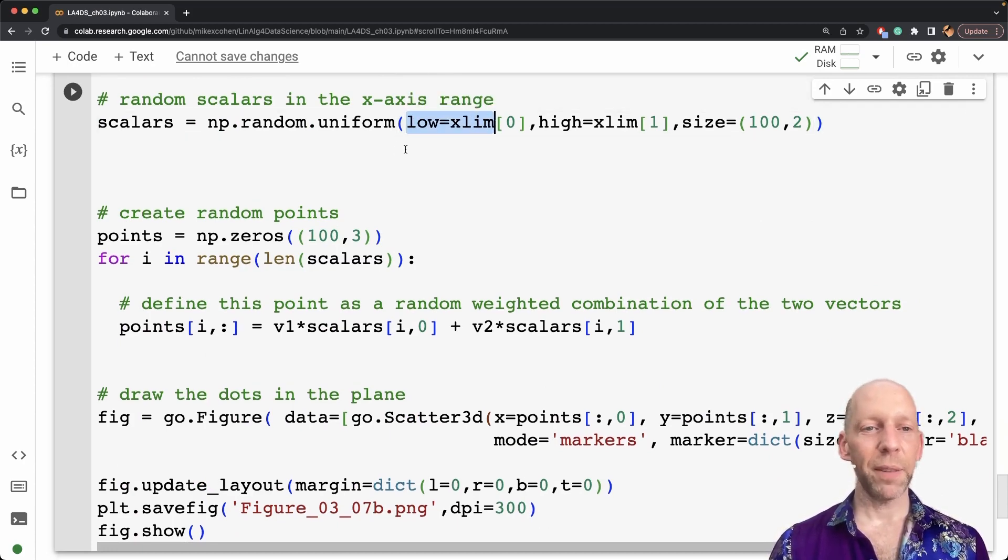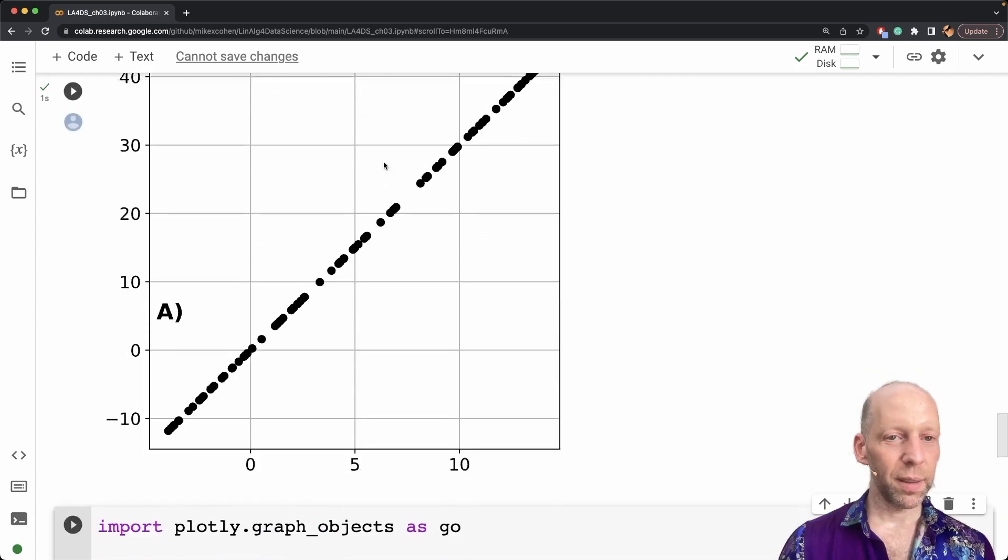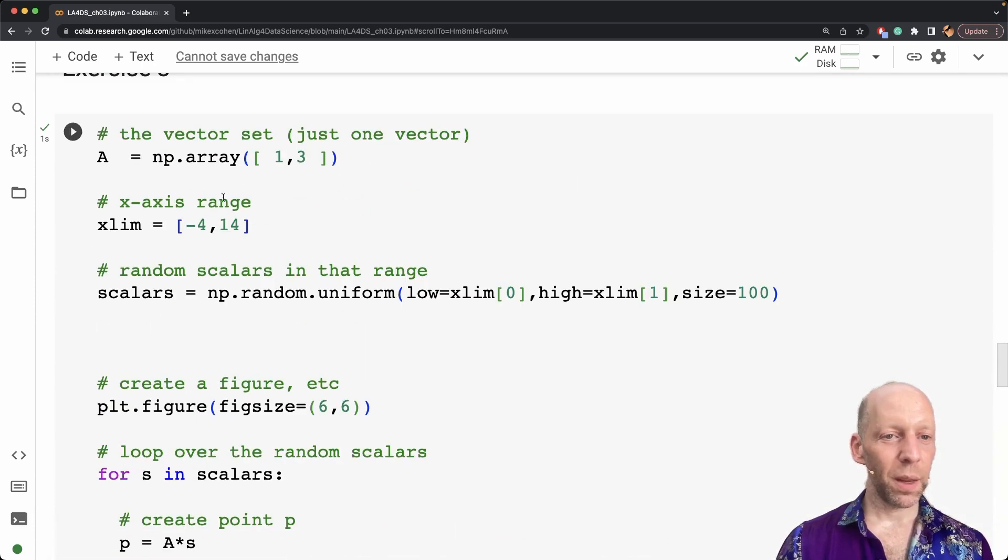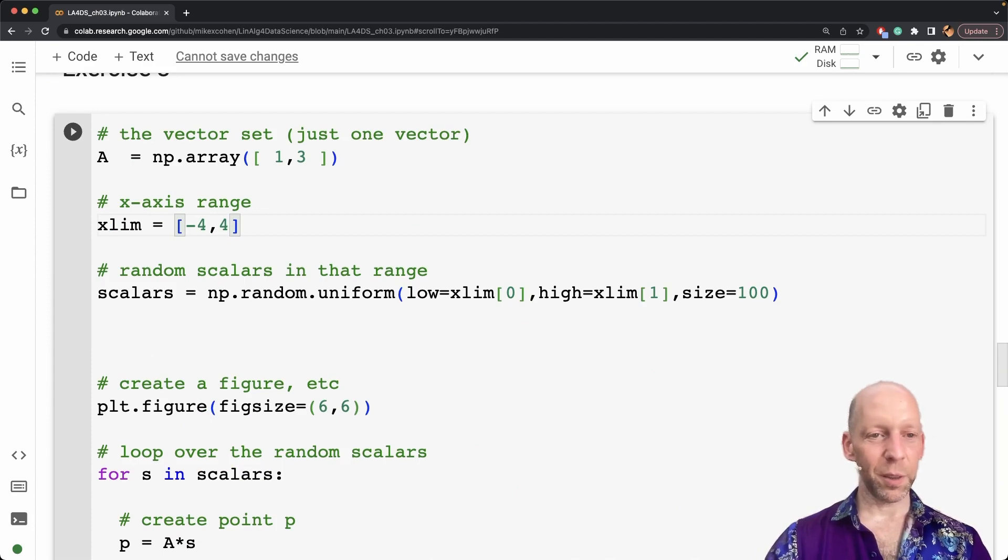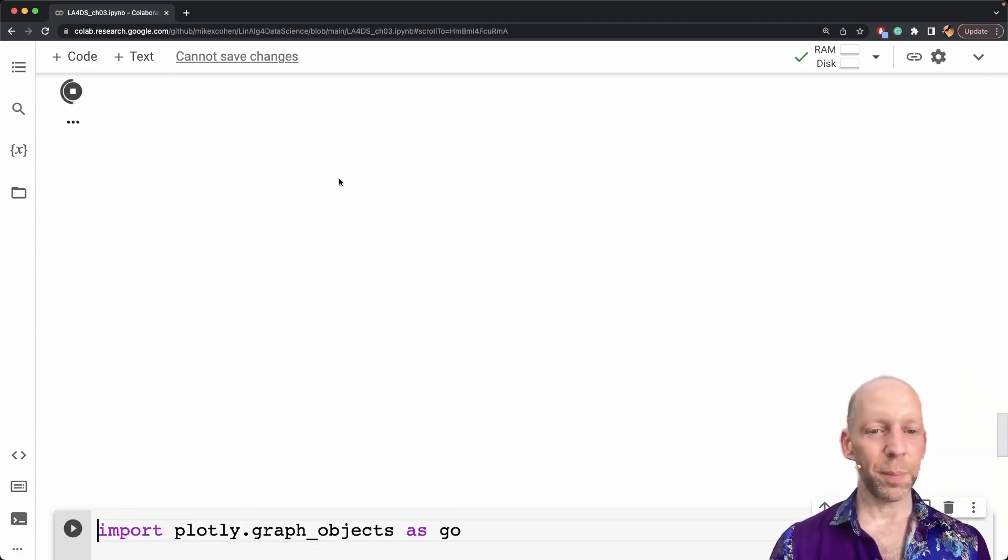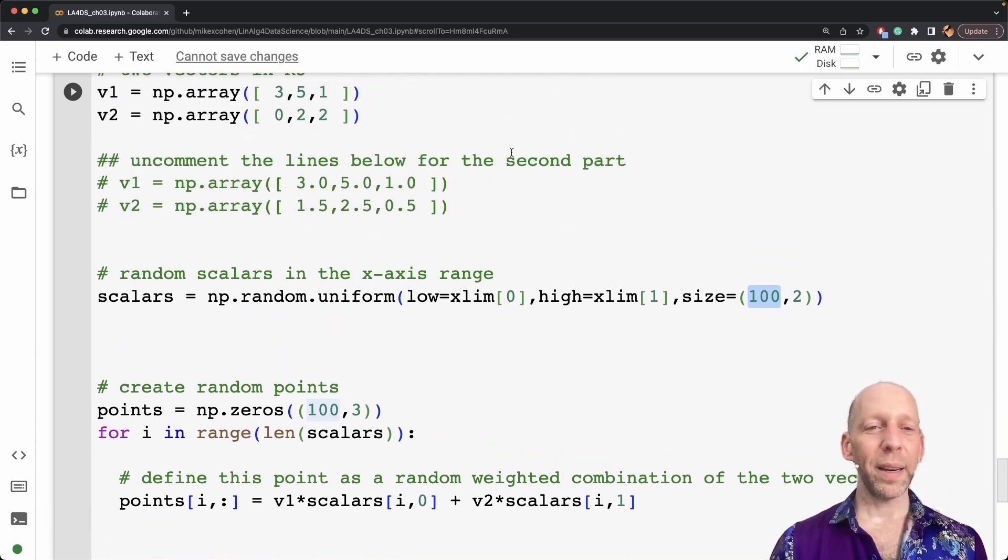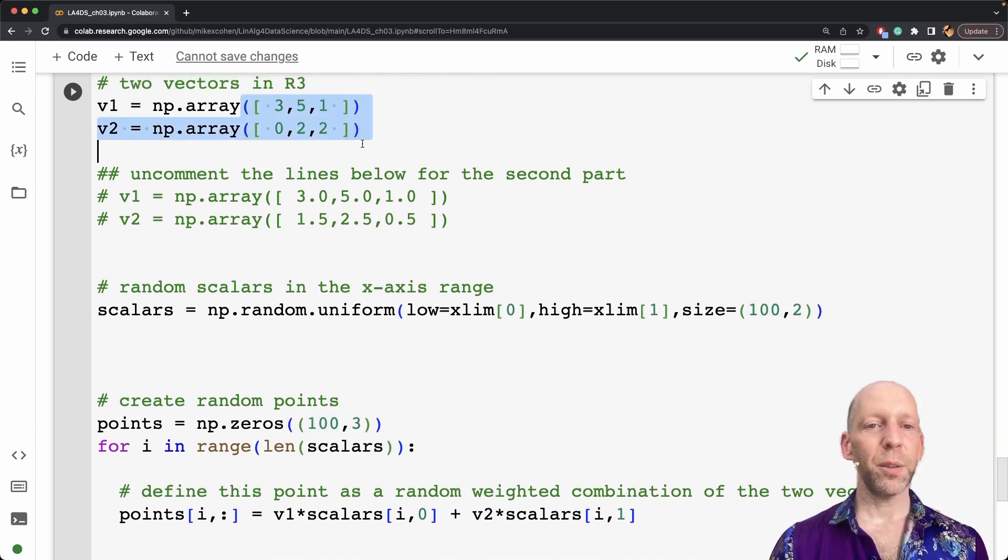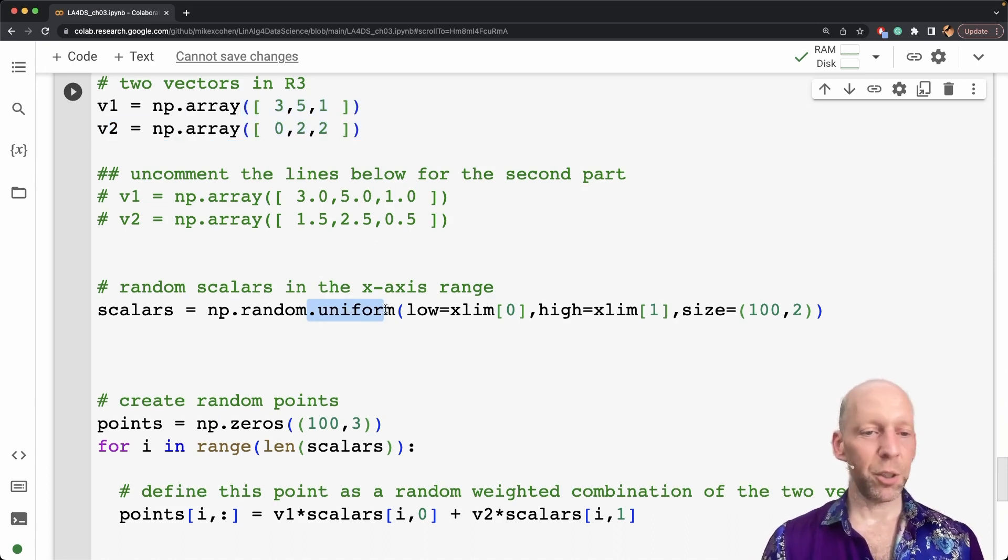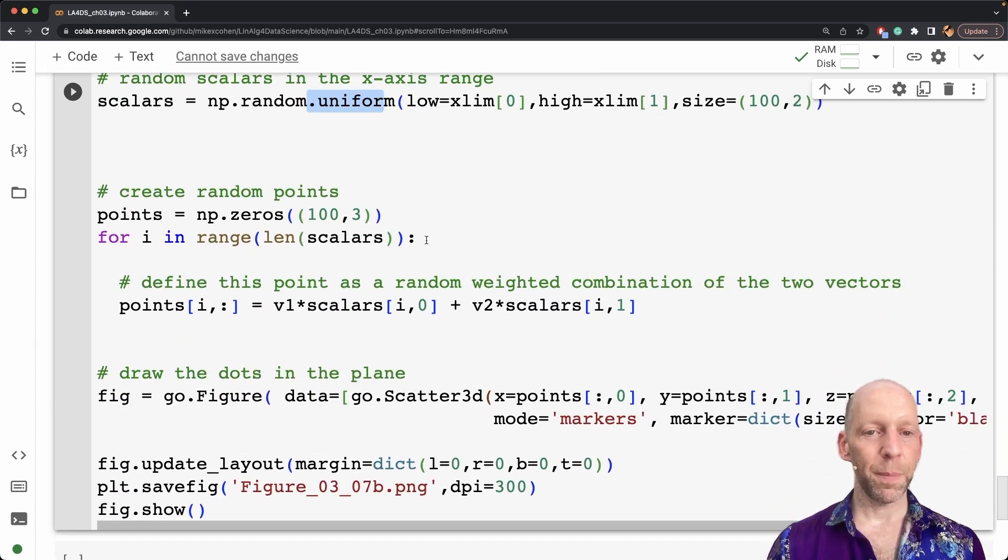And then the rest of it is the same. So we still have, actually, I think I will just to keep the visualization more manageable, I'm going to set this back to minus four to plus four. So now we have these random scalars of size 100 by 2. So we're going to draw 100 points. And each point is defined by the linear weighted combination between these two vectors, where the weights are coming from these numbers that are just generated purely at random.